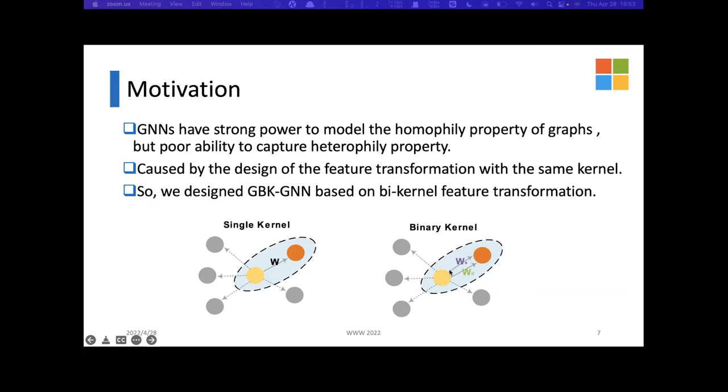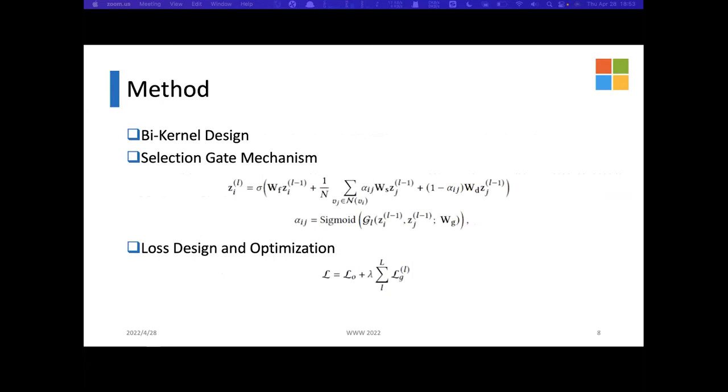we designed a novel GNN model based on a bi-kernel feature transformation and a selection gate. Two kernels capture the homophilic and heterophilic information respectively, and the gate is introduced to select which kernel we should use for the given node pairs. There are two main differences compared with vanilla GNNs: one is the bi-kernel feature transformation and the other is kernel selection gate modules.